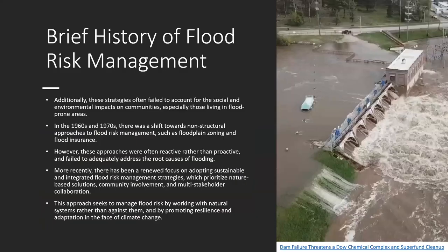These strategies often failed to account for social and environmental impacts on communities. In the 1960s and 70s, there was a shift toward non-structural approaches to flood risk management, such as floodplain zoning and flood insurance. However, these approaches were often reactive rather than proactive. Most recently, there has been renewed focus on adopting sustainable integrated flood risk management strategies that prioritize nature-based solutions, community involvement, and multi-stakeholder collaboration — managing flood risk by working with natural systems rather than against them, and promoting resilience in the face of climate change.